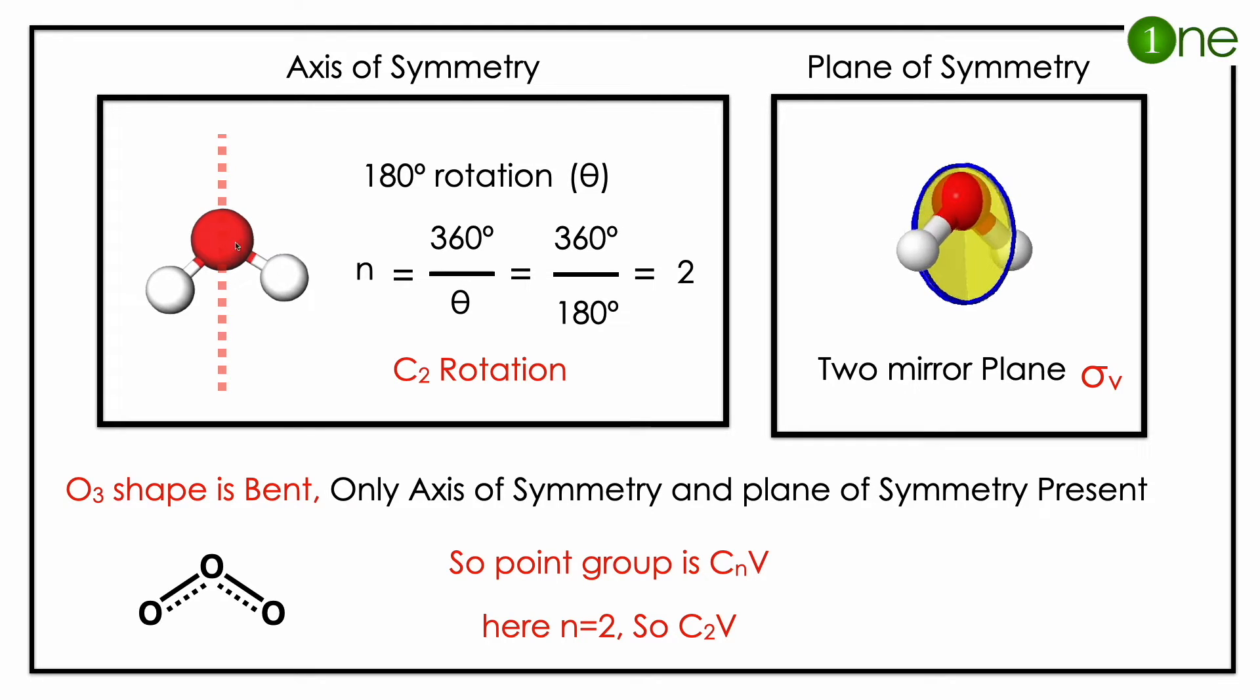So it has two symmetry elements: C2 and sigma v. So the point group of the molecule is CnV. Here n equals 2, so the point group is C2v.